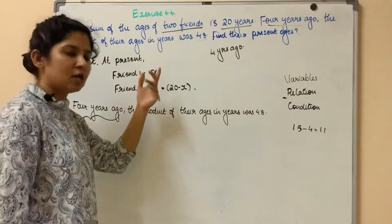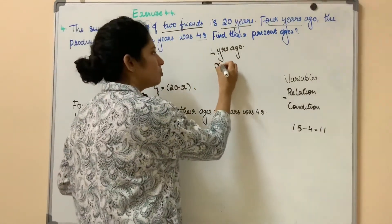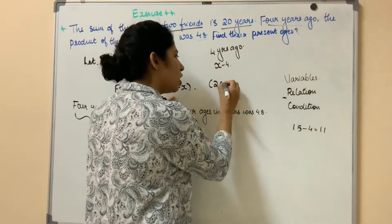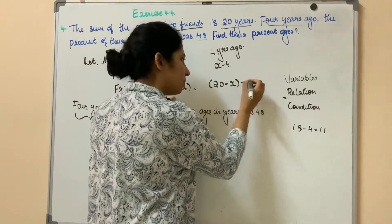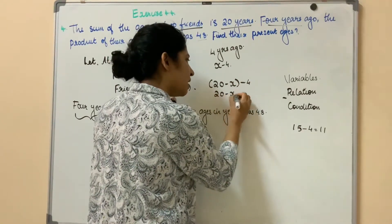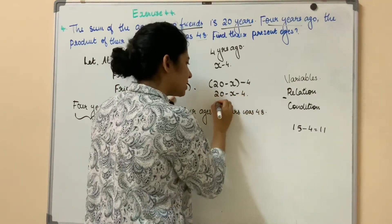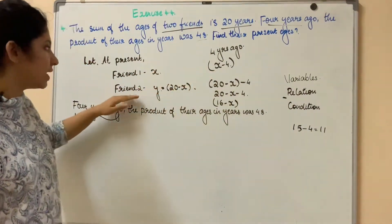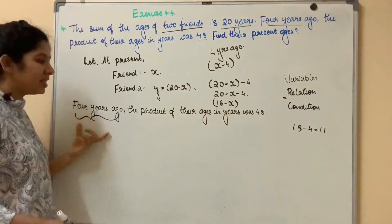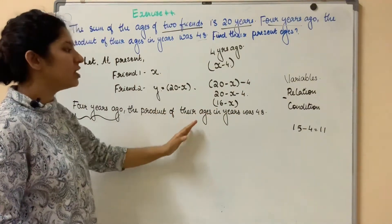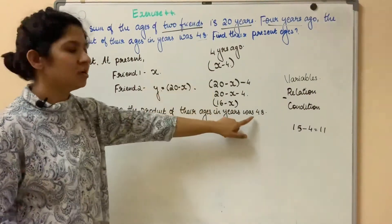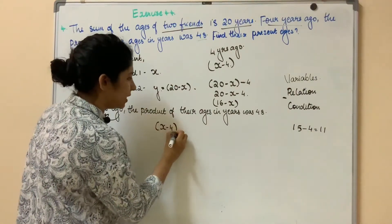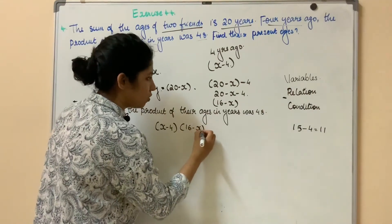At present, Friend 1's age is x years, so 4 years ago it was x minus 4. Friend 2's age is 20 minus x, so 4 years ago it was 20 minus x minus 4, which simplifies to 16 minus x. The condition states: 4 years ago, the product of Friend 1's age and Friend 2's age equals 48. That is, (x minus 4) into (16 minus x) equals 48.